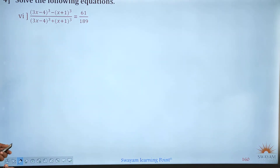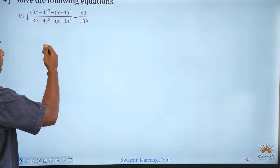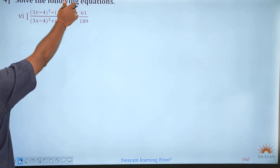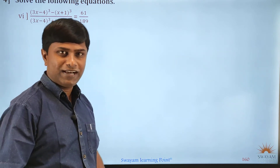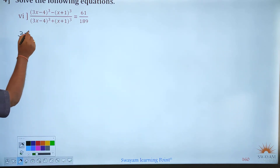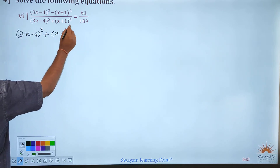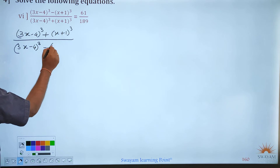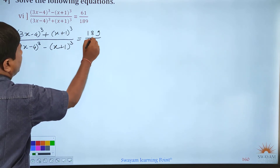Now the next example: (3x−4)³ minus (x+1)³ divided by (3x−4)³ plus (x+1)³ is equal to 61 divided by 189. Notice the numerator has minus and denominator has plus, so first we do invert and do: (3x−4)³ plus (x+1)³ divided by (3x−4)³ minus (x+1)³ is equal to 189 divided by 61.